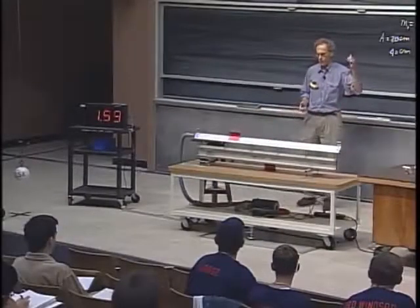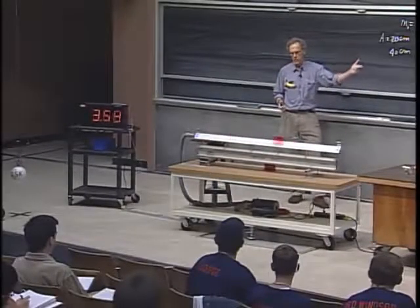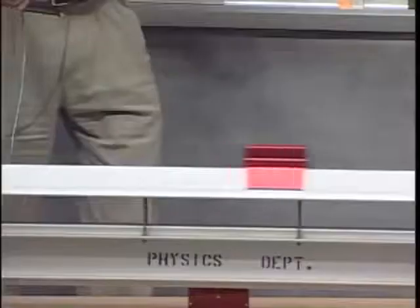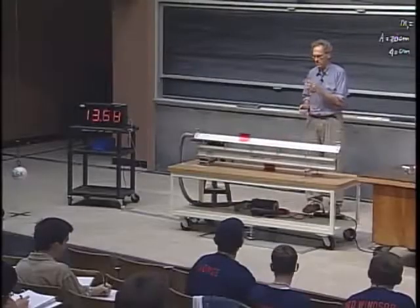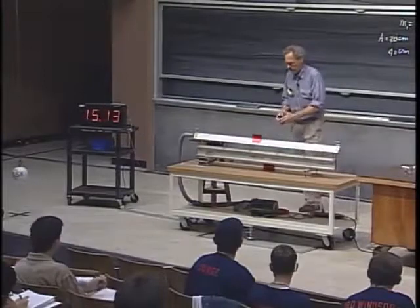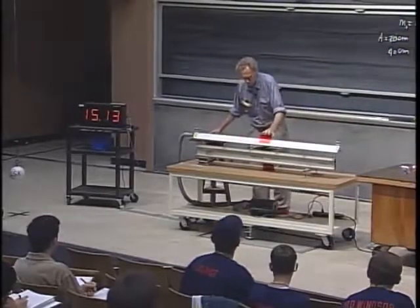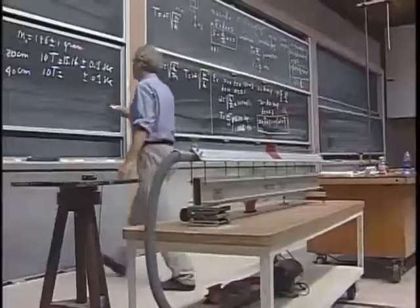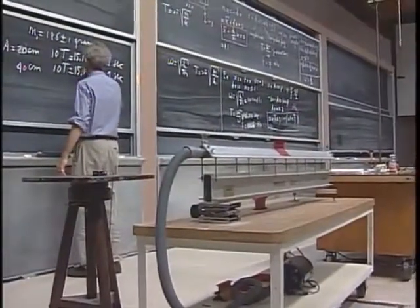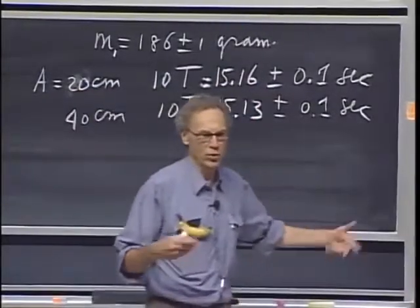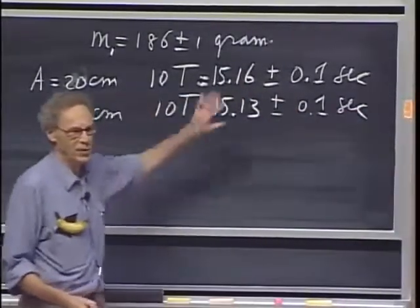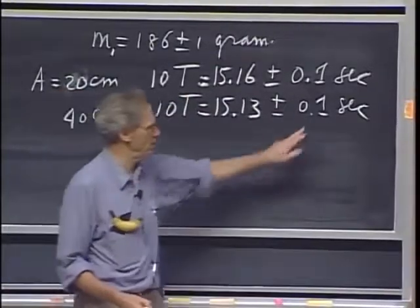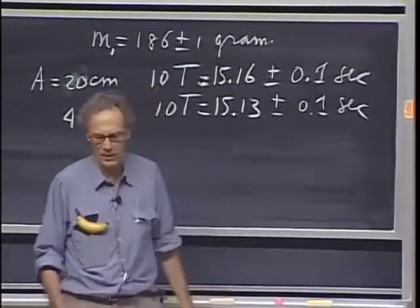Now, one, two, three, four, five, six, seven, eight, nine, ten. Fifteen point one three. Fantastic agreement within the uncertainty of my measurements. They are within three hundredths of a second. Of course, if you try it many times, you won't always get that close, because my reaction time is really not much better than a tenth of a second.